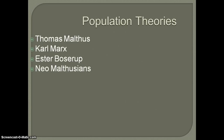Essentially what we're looking at today are a variety of different people — economists or philosophers who think about the impacts of people on the landscape, on the economies, and what is the trajectory of the world if we sustain current trends of population growth or our current social conditions. In this first video, we're only going to talk about Thomas Malthus and Karl Marx. Then we'll move on to Esther Boserup and the Neo-Malthusians in our next video.